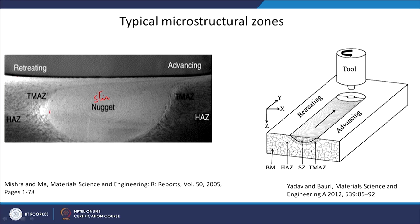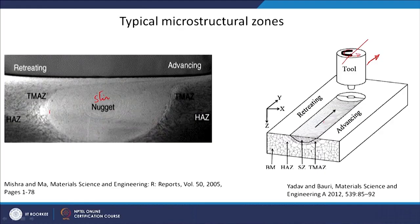There are two sides shown: one is called retreating and another is called advancing. In this schematic the tool is rotating in one direction and also moving in a traverse direction. On the side where the tool rotation direction and the traverse direction are the same, that is called the advancing side. On the other side the tool rotation is opposite to the traverse direction — that part of the process zone is called the retreating side.